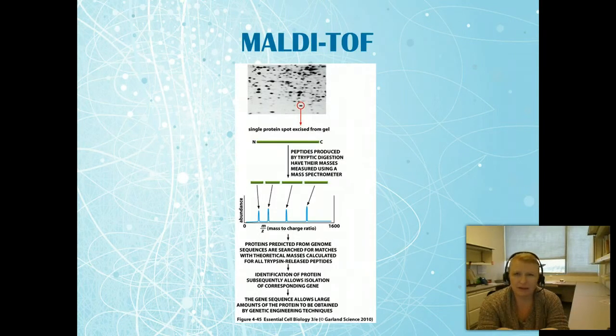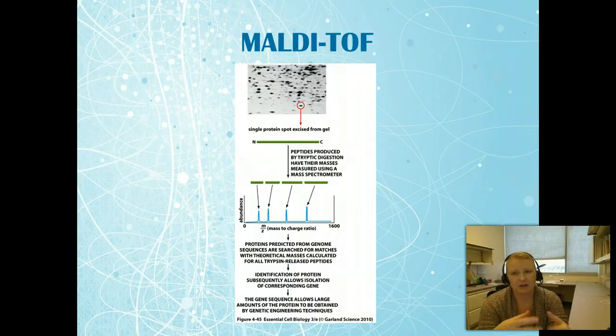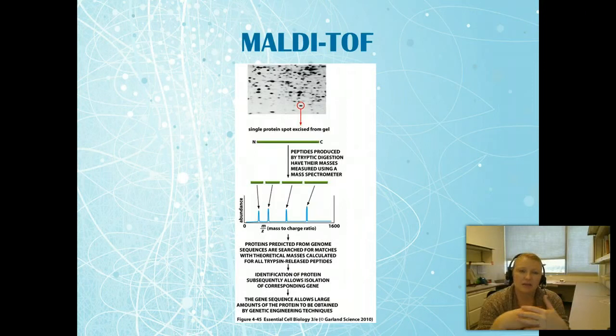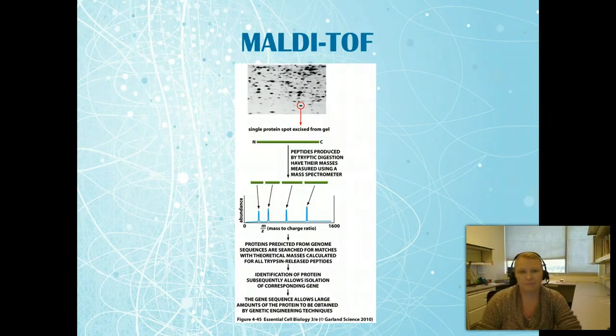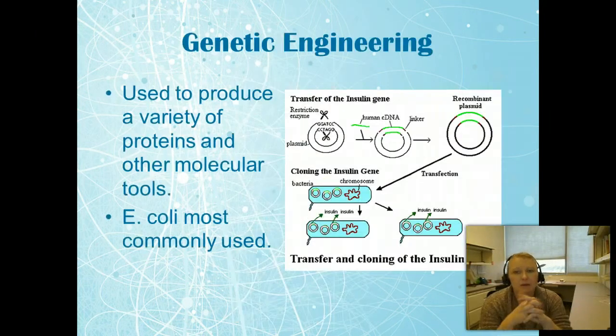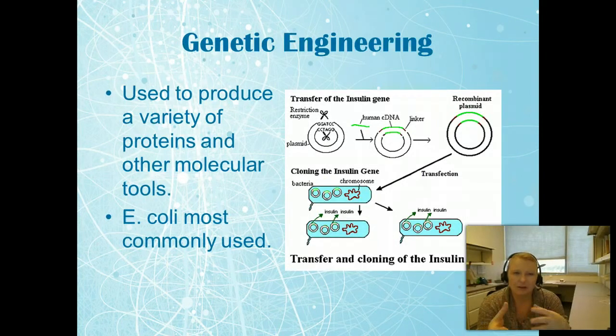What this allows us to do is figure out exactly what that protein is. Going back to that two-dimensional western blot, that 2D DIGE, if we were to extract a protein from there, we don't know what it is at this point. We can put it through MALDI-TOF and it would provide us an identification because we can compare it to other proteins that we've already run through and see what it matches. This helps us actually identify those proteins from before.